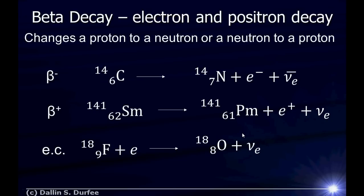Electron capture is kind of like beta minus in reverse, except the neutrino is on this side instead of that side. You might ask: is there something like beta plus decay in reverse — positron capture? It should be possible, but positrons just aren't that common. They show up when we do beta plus decay, but very quickly they tend to find an electron and annihilate each other and turn into two photons. So there's just not an abundance of positrons around, and you just don't see positron capture — but in theory, it should be possible.